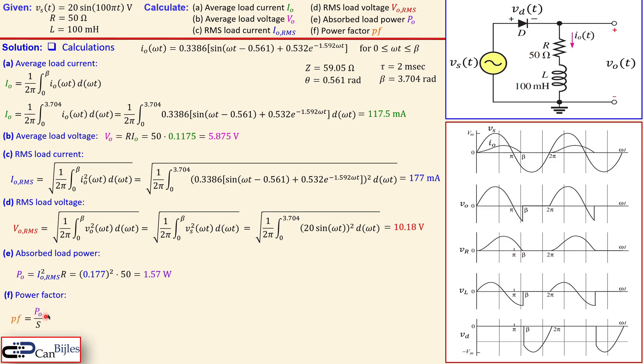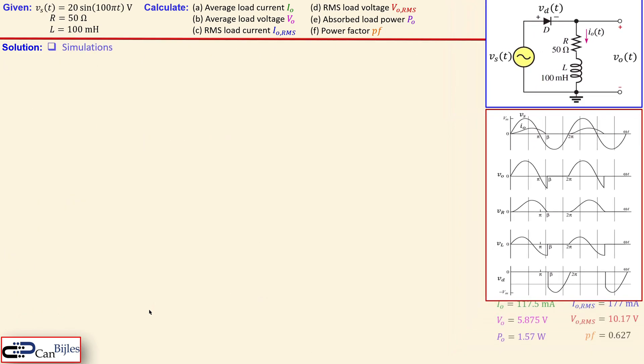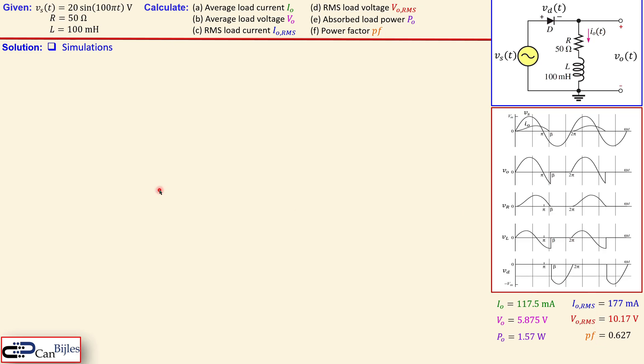Power factor is again defined as the true power or the absorbed power divided by the apparent power. S is the RMS value of the source voltage times the RMS value of the source current. Source current RMS value is equal to the load current RMS value because they are in series. And we know what that is, that is 177 milliamps. The source voltage RMS is the amplitude of this pure sine wave divided by the square root of 2. That is actually a straightforward calculation. Again using this definition for the RMS, that will give us 14.14 volts. Then we have for the apparent power 2.503 volt amperes. Now substitute that in this formula, you get here now 0.627 for our power factor. Okay. Now we have all the necessary values for this calculation. So we have these six solutions here.